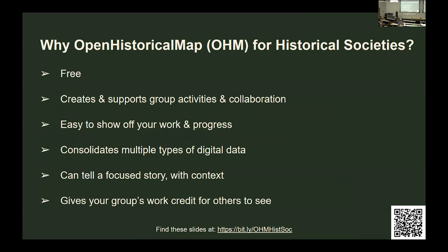So why does your historical society want to use Open Historical Map? It's kind of self-explanatory — for mapping history. But the first point is it costs nothing. Hopefully it fits in with all the types of things you already do, helps support group activities, takes the work you've already done and gives it a new format to show in a dynamic way. It's built for digital data, and it helps you tell a real story in the context of where things used to be — not modern street names, not modern buildings. When you say someone's grandmother lived on such-and-such street, you want a map that shows the grocery store she went to or where she worked. And it will also give you credit so you can see her name in action.